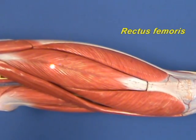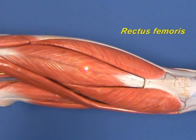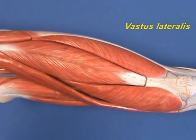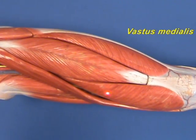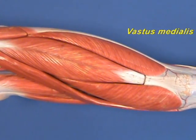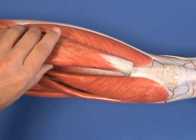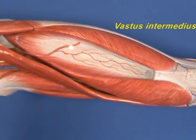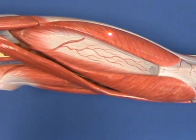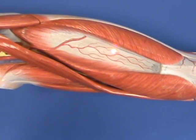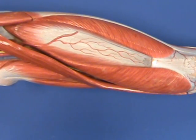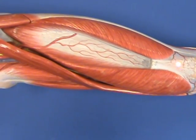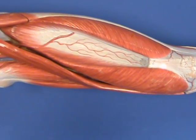Here again is the rectus femoris muscle. The other three muscles that comprise the quadriceps femoris muscle are on the lateral side, the vastus lateralis; on the medial side, the vastus medialis; and if we remove the rectus femoris muscle, we reveal underneath the vastus intermedius muscle. All three of these vastus muscles — vastus lateralis, vastus medialis, and vastus intermedius — have origins on the femur and insert along with the rectus femoris on the quadriceps femoris tendon, which includes the patella, the kneecap. These muscles all are extenders of the leg at the knee joint.